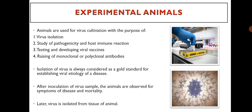Animals are used for virus cultivation with the purpose of virus isolation, study of pathogenicity and host immune reaction, testing and developing viral vaccines, and raising of monoclonal and polyclonal antibodies. Isolation of virus is always considered as the gold standard for establishing viral etiology of a disease. After inoculation of virus sample, the animals are observed for symptoms of disease and mortality, and later virus is isolated from tissue of the animal.